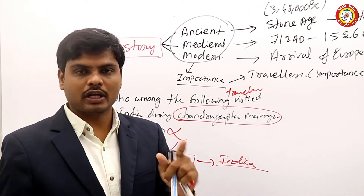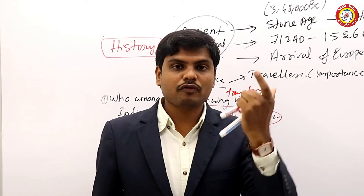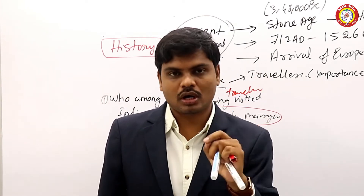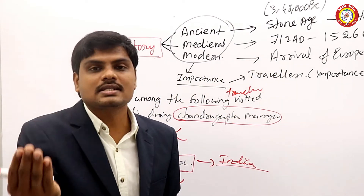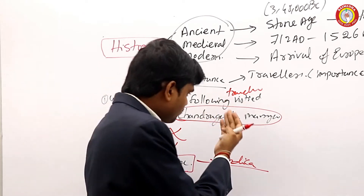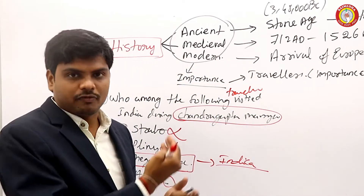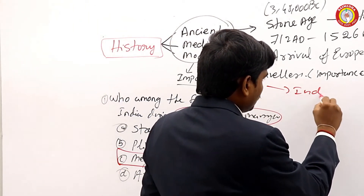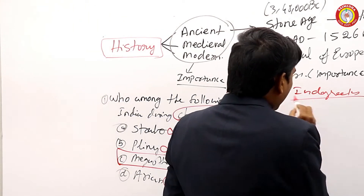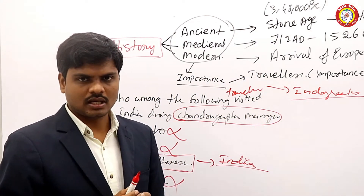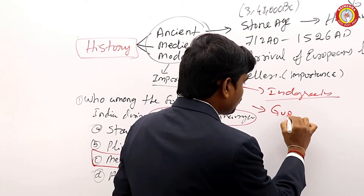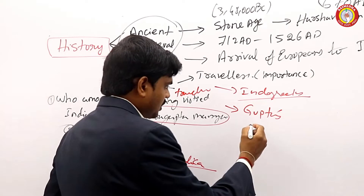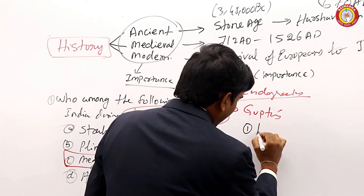Chandragupta Maurya is a powerful ruler you need to understand. Ashoka is a very powerful ruler you need to understand. During the reign of Ashoka, was there any traveler who visited India? You need to understand this concept. After the Mauryan Empire, who was very powerful? There was Indo-Greece — you need to know some small information about that. Apart from Indo-Greece, you need to understand the Guptas, because there is another important person in the Guptas: Kalidasa.